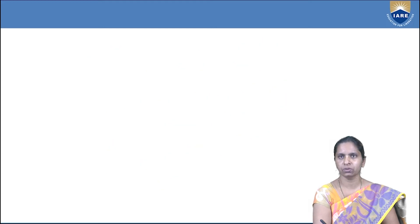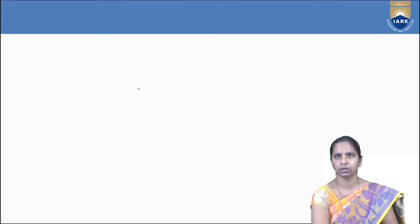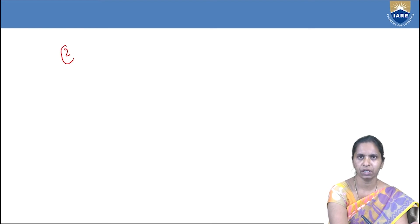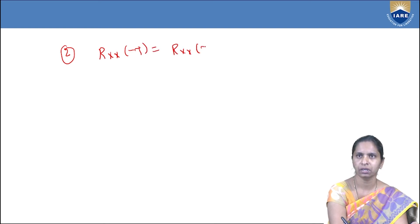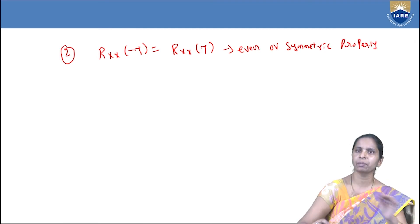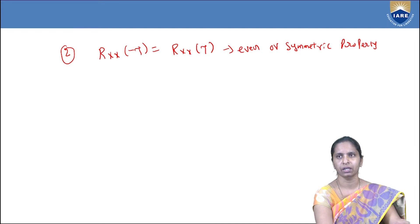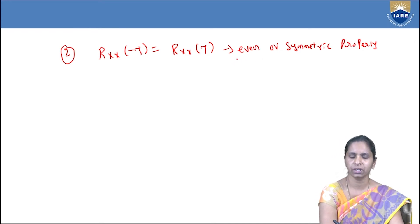The second property states that R_xx(-τ) = R_xx(τ). Let us prove this property. This is called the even or symmetric property. The statement is: the autocorrelation function is an even function of τ, and it is symmetric about the origin. We consider the random process x(t) to be stationary, so R_xx(τ) is a function of only τ.